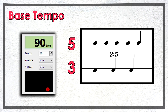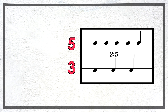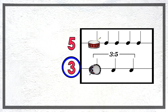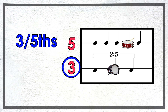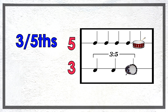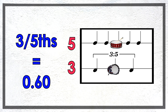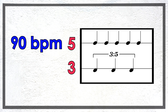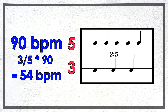Now let's quantify in beats per minute just how much slower the three side would be. If the three side is playing three beats in the same amount of time as the five side is playing five beats, then the three side is three fifths the tempo of the five side. We can also write three fifths as a decimal, which is 0.60. Now if the five side has a tempo of 90 beats per minute, then the tempo of the three side would be three fifths of 90 beats per minute, which is 54 beats per minute.